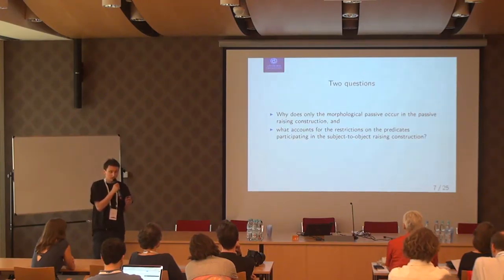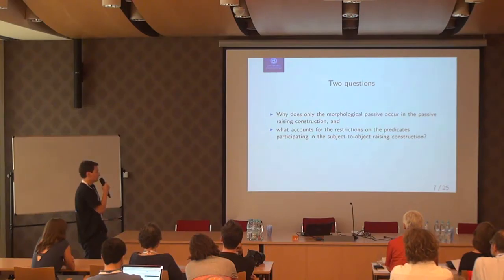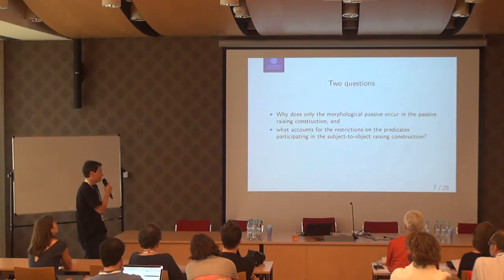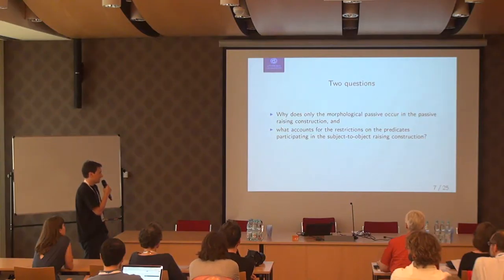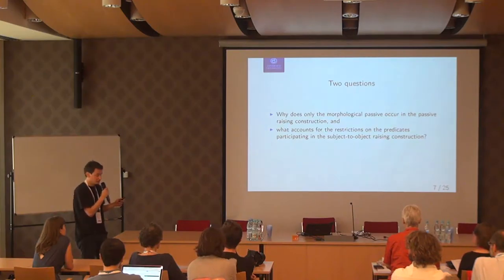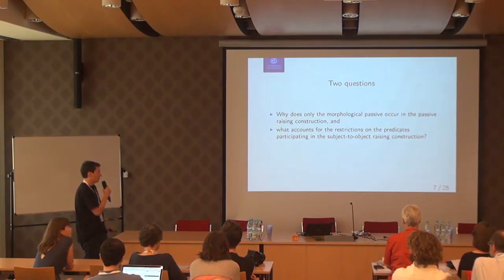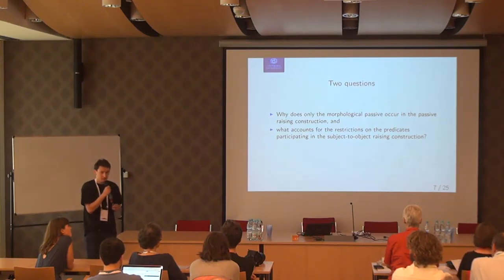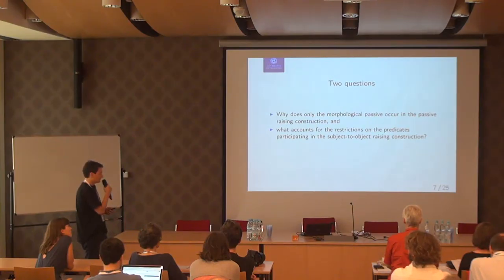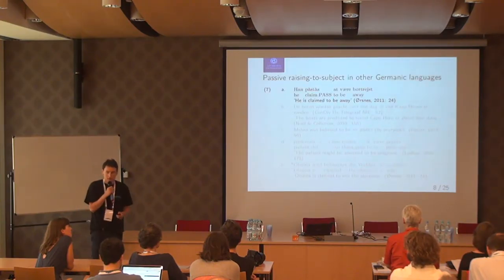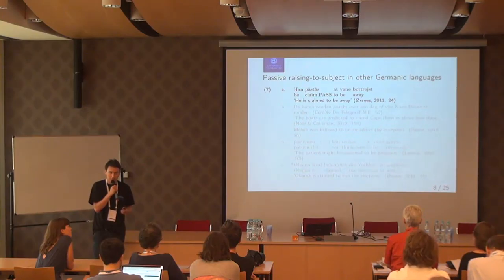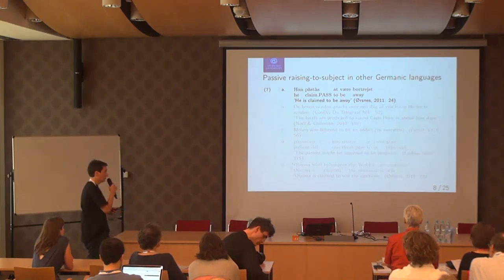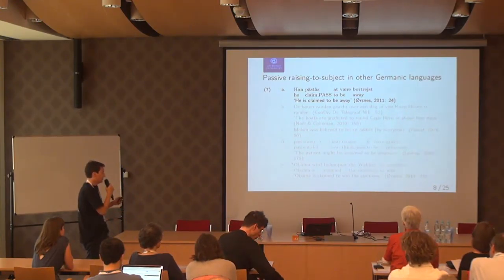So there are two, maybe more, questions in relation to the data shown so far. Why does only the morphological passive occur in the passive raising construction — raising-to-subject with passive predicates? And what accounts for the restrictions we see on the predicates participating in the raising-to-object construction? Before going into these questions, I'd like to mention that this construction — raising-to-subject with passive predicates — is also possible in several of the other Germanic languages.